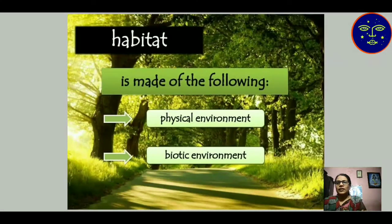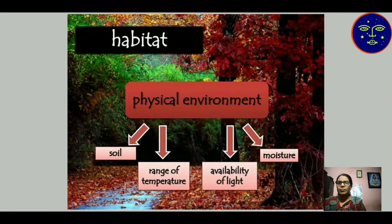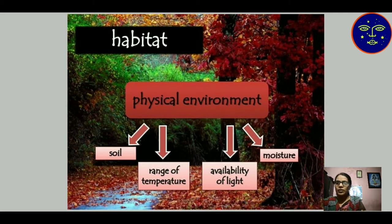Habitat is made of two types: one is physical environment and another is biotic environment. In physical environment, it undergoes towards abiotic environment. Abiotic means non-living environment. The physical environment includes soil, range of temperature, availability of light, light quality, and moisture quantity. All of these fall under the abiotic condition, which is known as the physical environment.